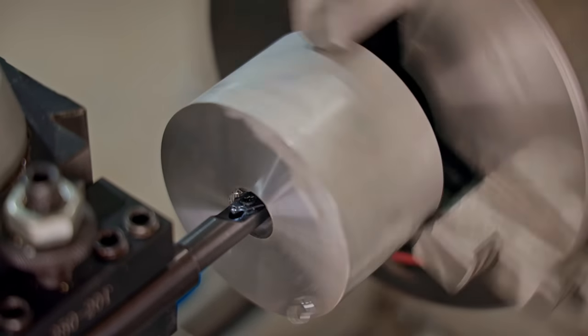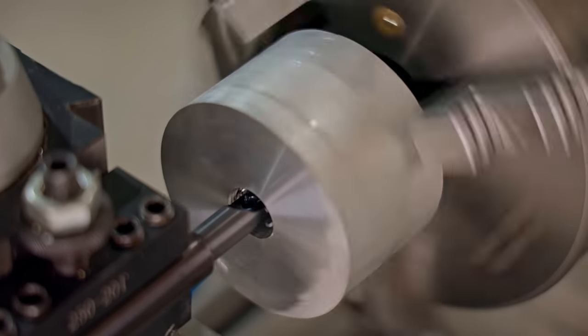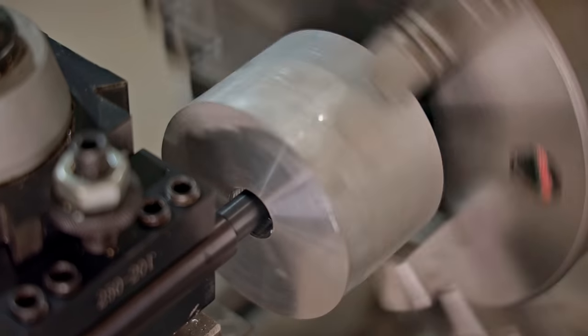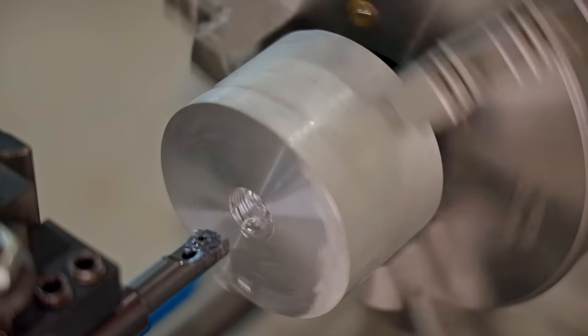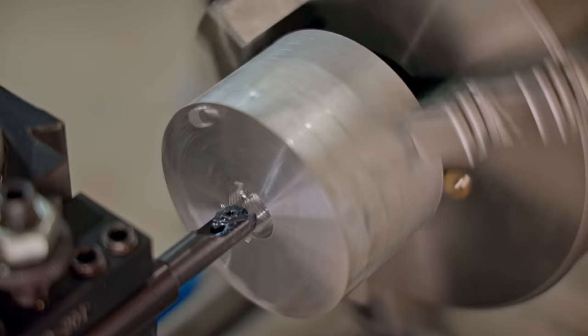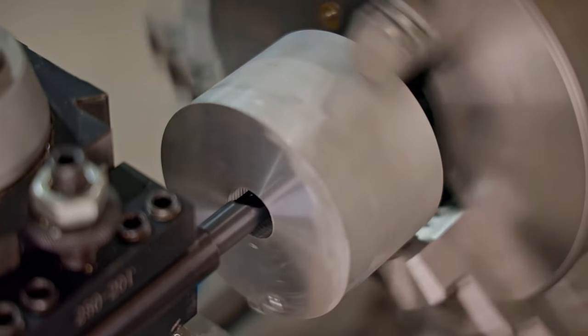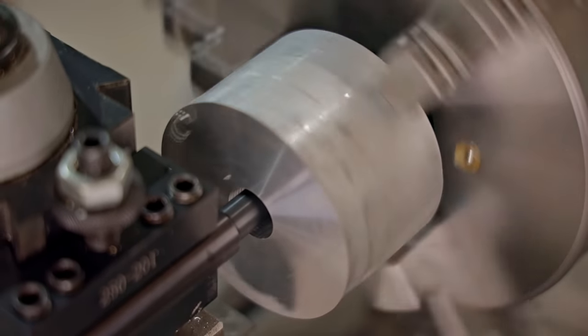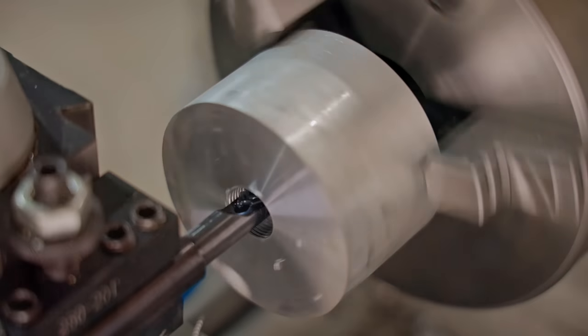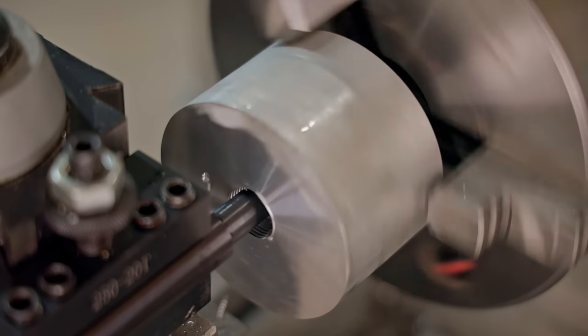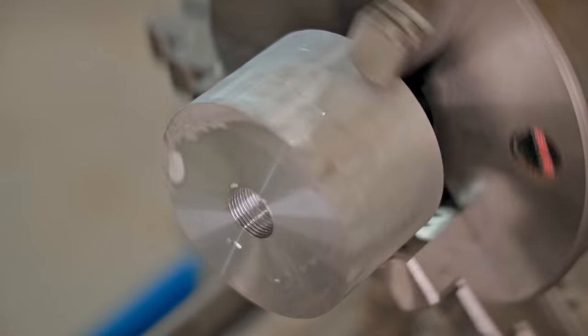I've only ever single point threaded once before and this is the first time with an internal thread and by the way the thread is three quarter twenty as the machine is old and mainly imperial. And when I say mainly there's a bit of a mix and some parts are imperial and some are metric so I'm guessing it was made in the 1950s or 60s as Australia transitioned to metric.